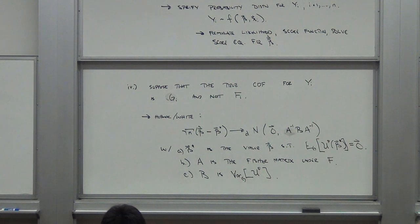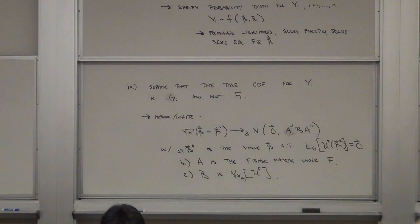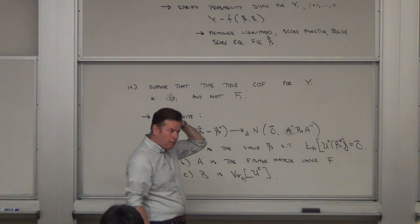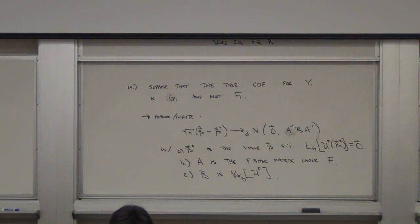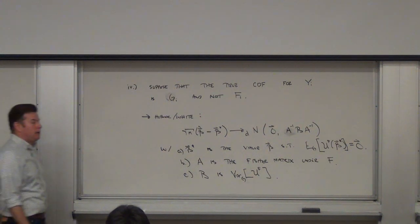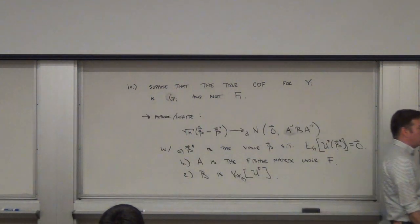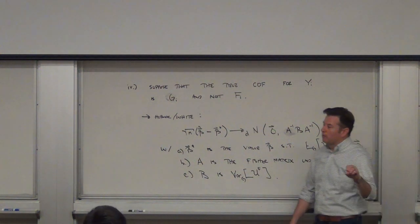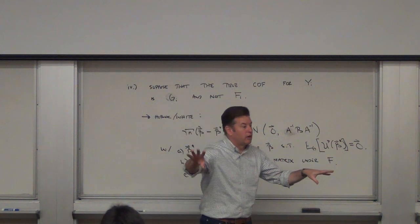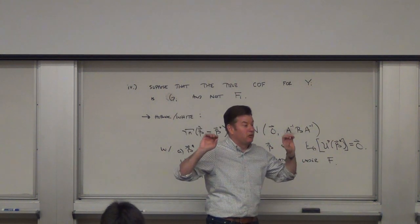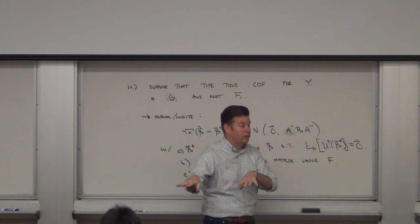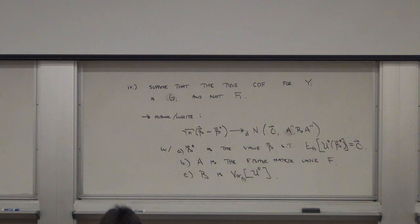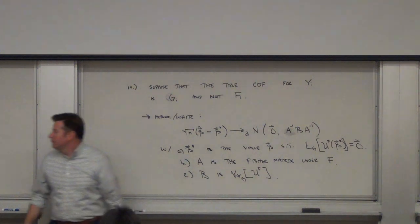So now let's put that into practice with the beetles data. Any questions before I get rolling? Is there a situation where you have to worry about beta star? Yes — I'm going to show you one. In lecture four, people have come up with estimating functions that not only specify the first moment, they also specify the second moment. In those cases, you need both the mean and the variance correctly specified to get consistency. So you don't get the mean for free anymore.